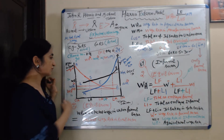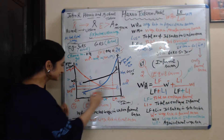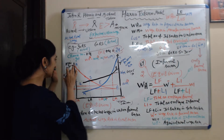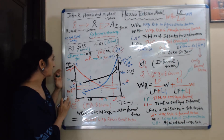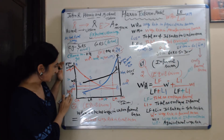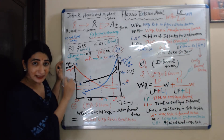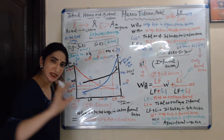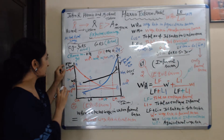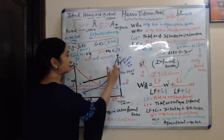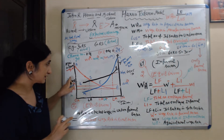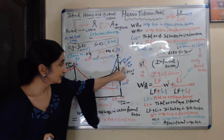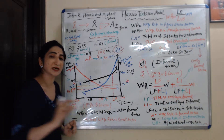Now we understand the whole process of migration with the help of a diagram. On the x-axis, we take the number of labor. On the y-axis, on the left side, we take agriculture wage rate, and on the right side, we take manufacturing wage rate.